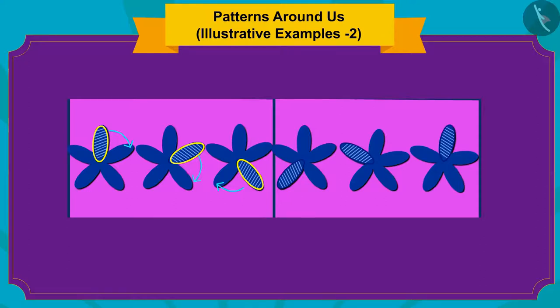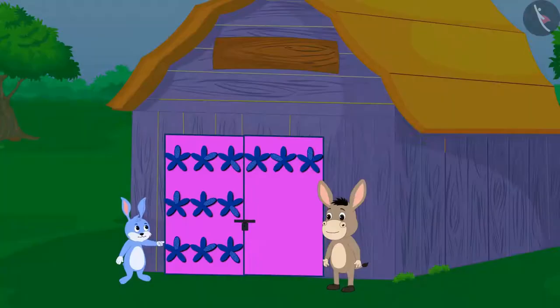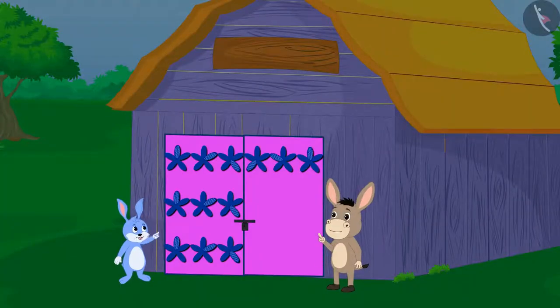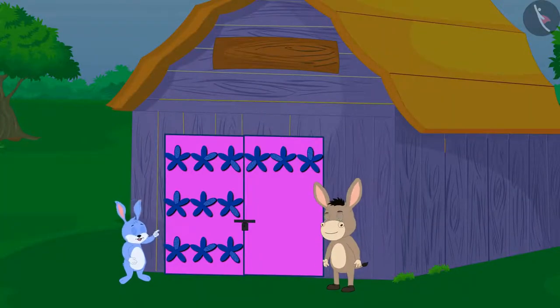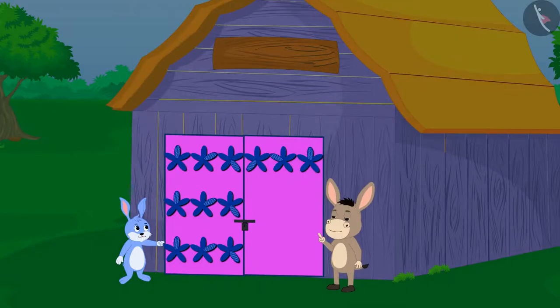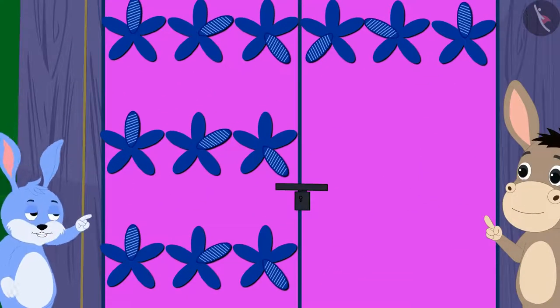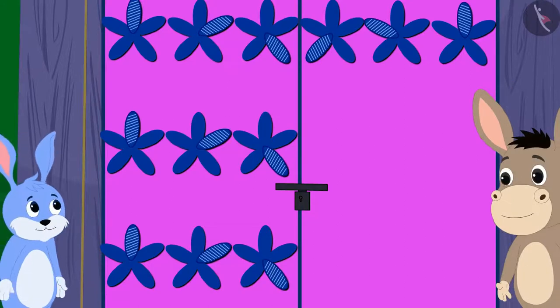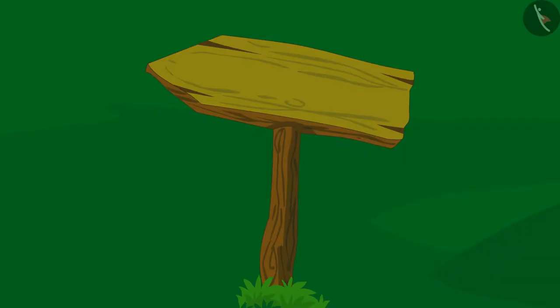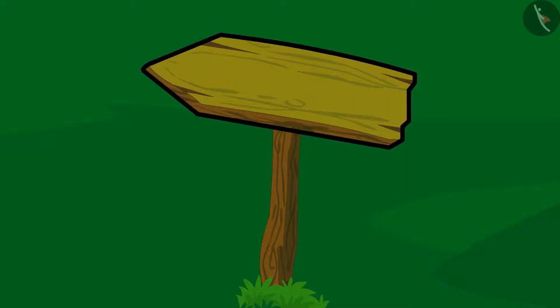Just like you did, Bola and Bunny completed the pattern of the second door by finding the rule of this pattern. As soon as Bola and Bunny completed the pattern on the door, they magically saw an arrow sign on the way out.